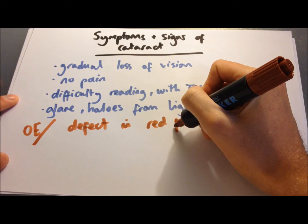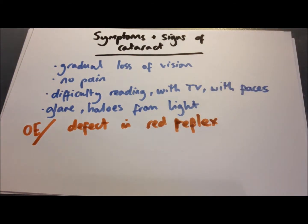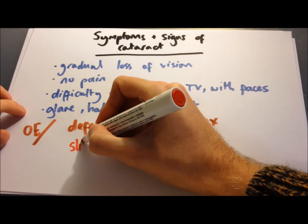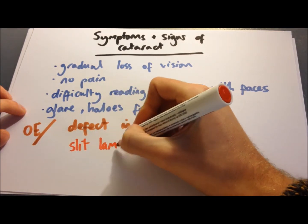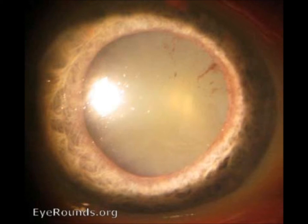When you examine the patient through a slit lamp, you'll be able to see the cataracts — whether nuclear sclerosis, cortical, or posterior subcapsular. This photo shows a quite severe nuclear sclerosis cataract where you can't see through the lens at all — it's entirely white opacification.